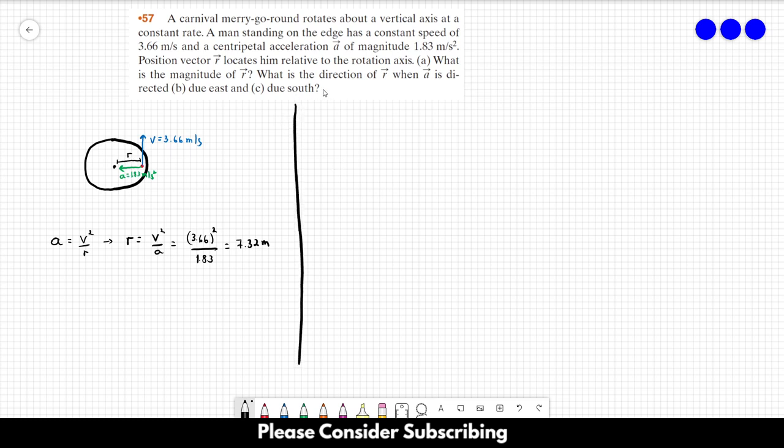So now for letter B and C. What is the direction of R when A is directed to east and to south? So if the acceleration points to the east, okay, so let's draw a little bit here. So if the acceleration points to the east, the acceleration always points to the center. So that's the acceleration.